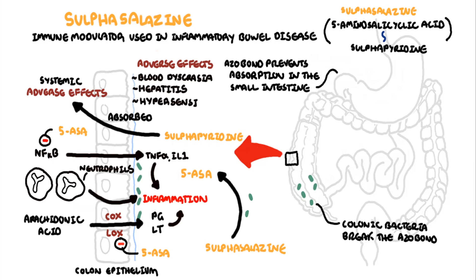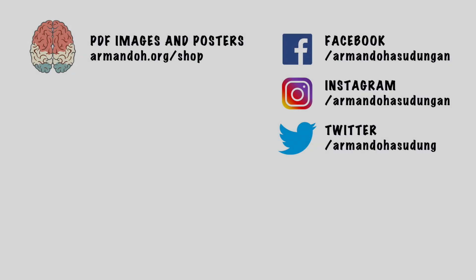People who have sulfa allergies are more prone to side effects. Finally, an important side effect is the risk of low sperm count in males. I hope you enjoyed this video on sulfasalazine, which is an immunomodulator used to treat many rheumatological conditions, mainly well known for treatment in inflammatory bowel disease.